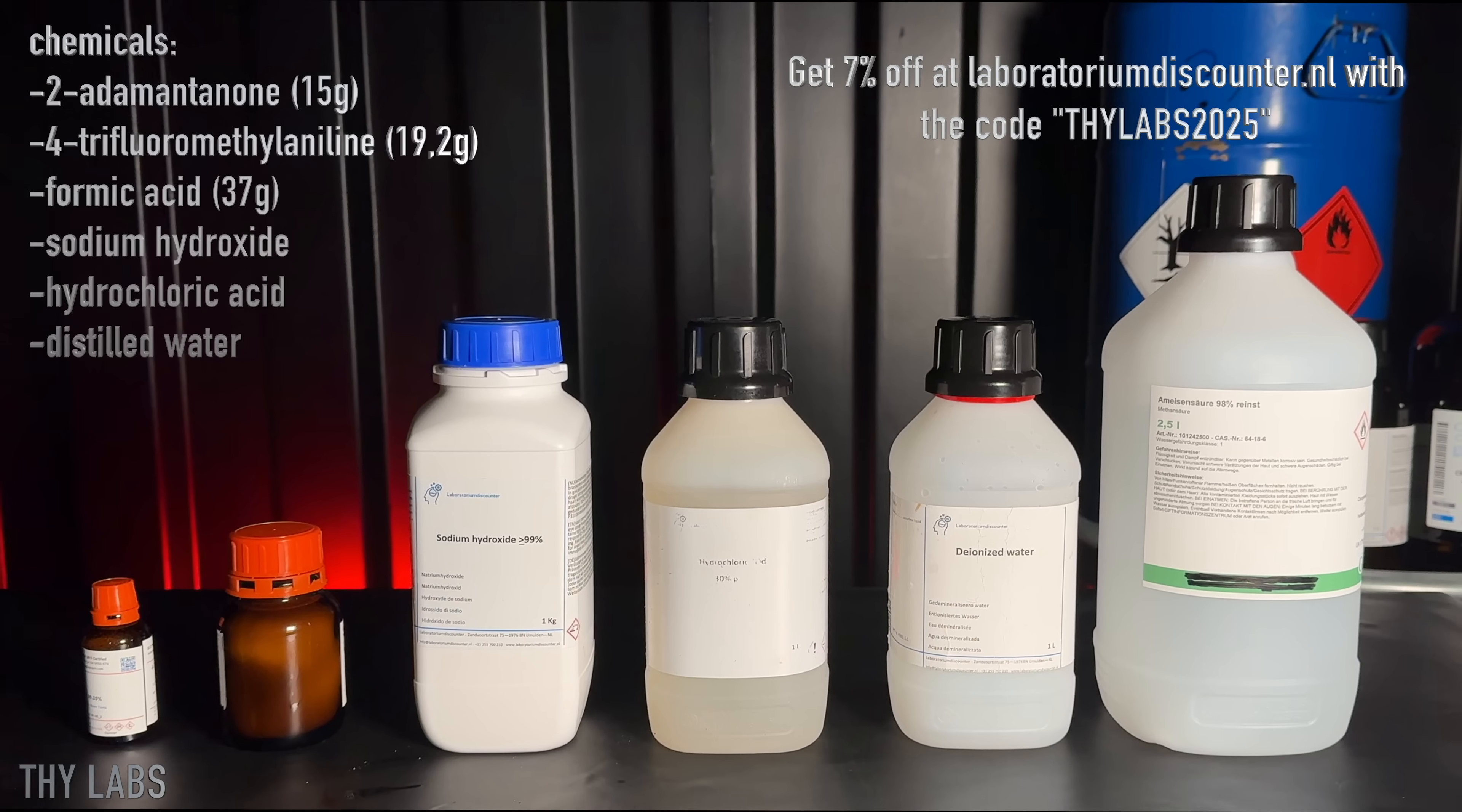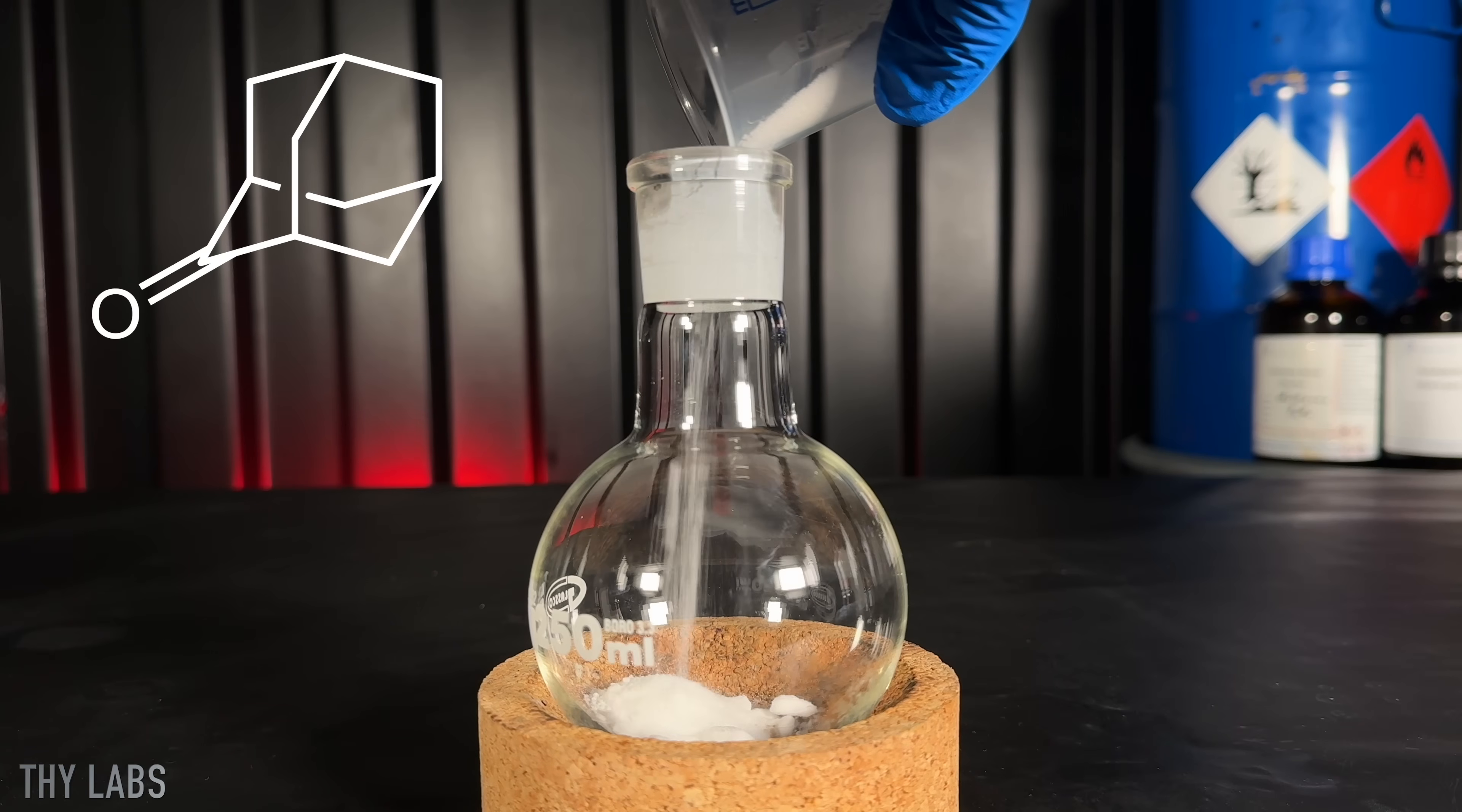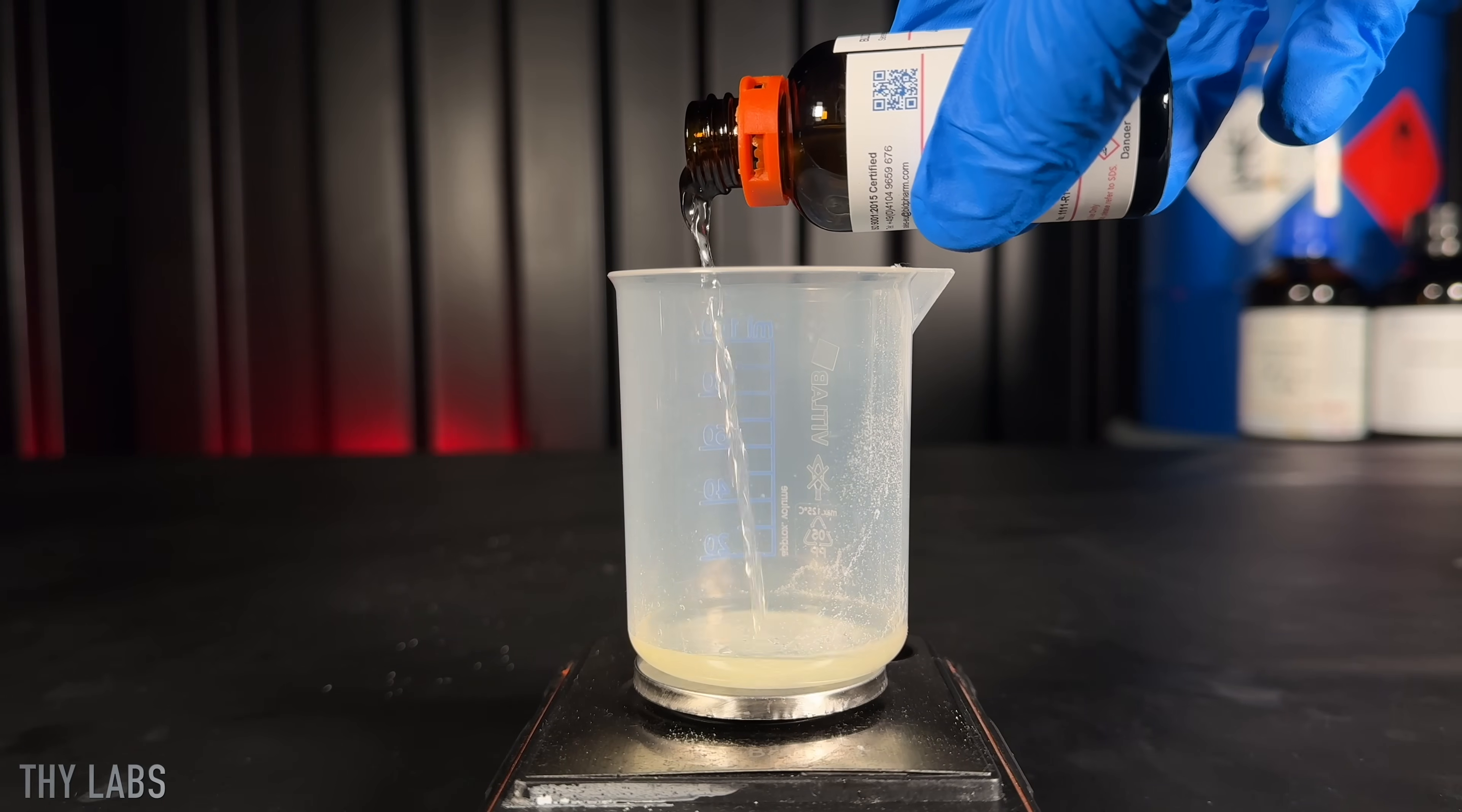For this synthesis I am only going to need 6 chemicals. I began by weighing out the 2-adamantanone, which is a very interesting looking molecule. I weighed out the trifluoromethylamine next, and I had to be quick while doing this, because it is really cold in my lab, and it likes to freeze.